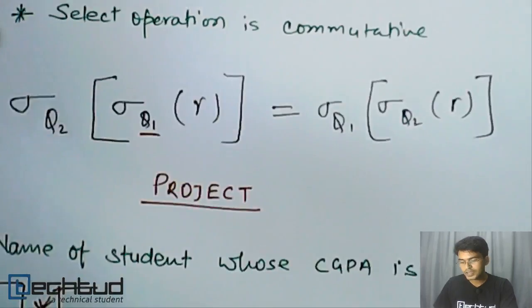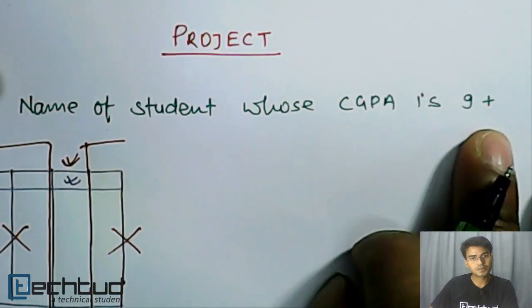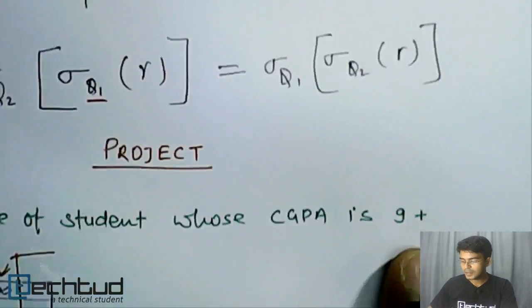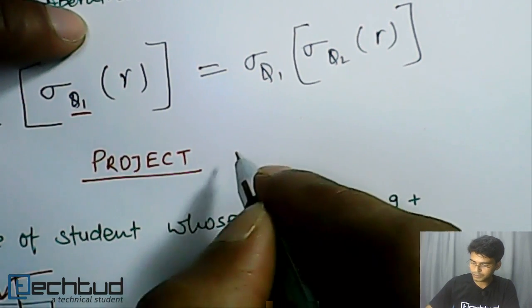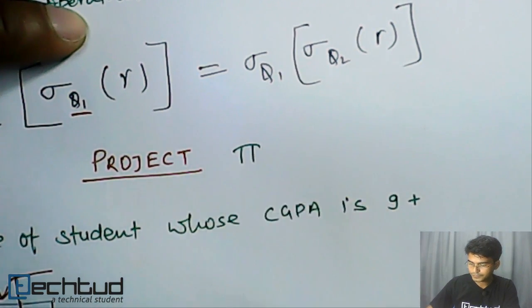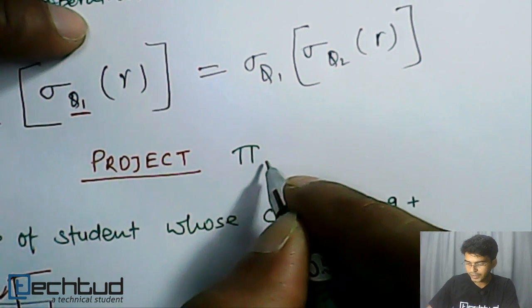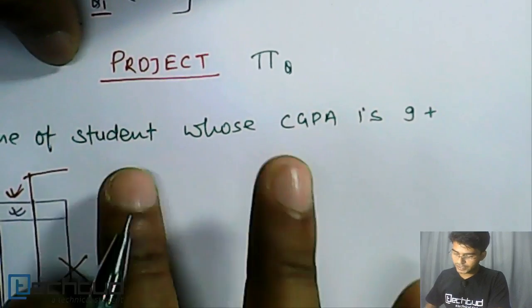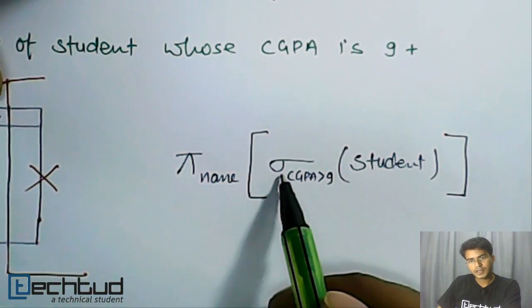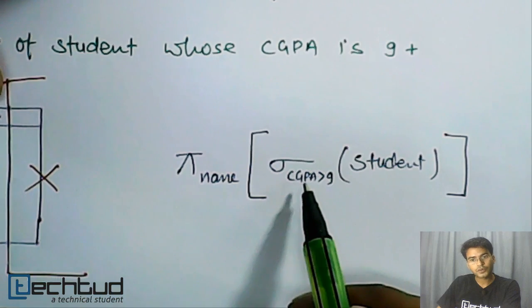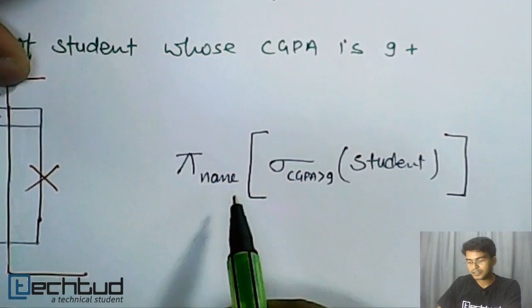So in this previous example, let's say it is saying I want the name of students whose CGPA is 9 plus. Then how do we write this? First of all, we write this project operation by phi symbol. And similarly, we can also write conditions by theta. So let's write this. How do we write this? From the relation, we select those records whose CGPA is greater than 9, and then we filter the remaining attributes and keep only the required attribute, that is name here.